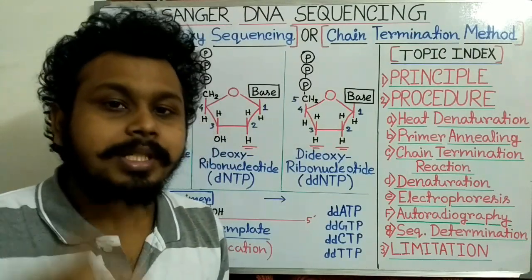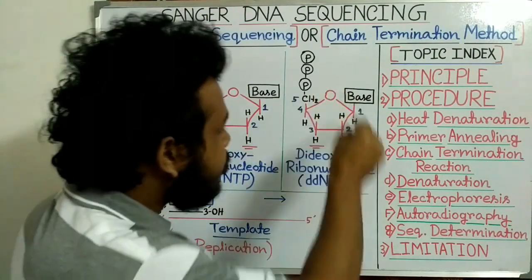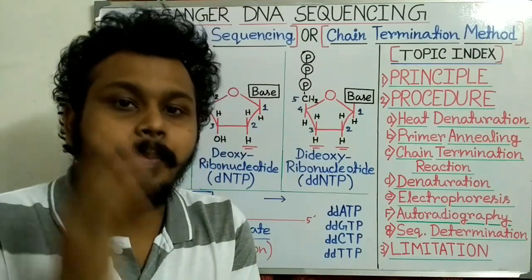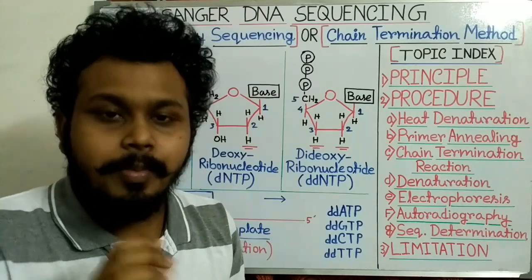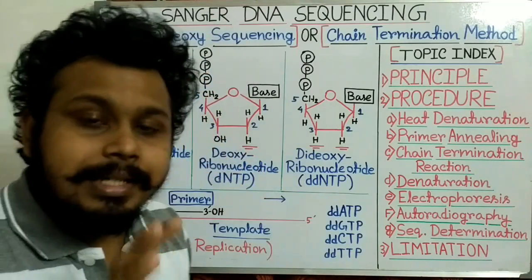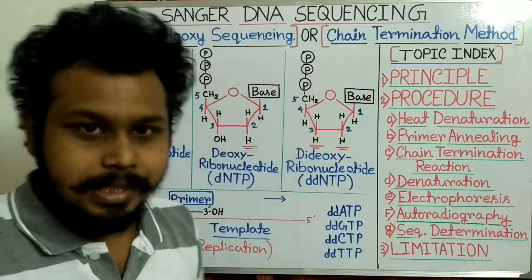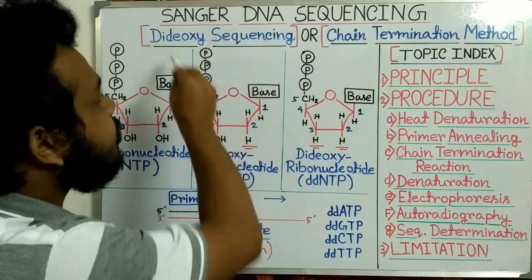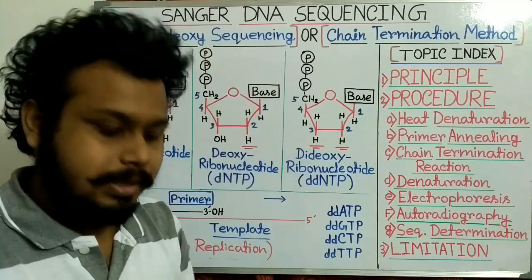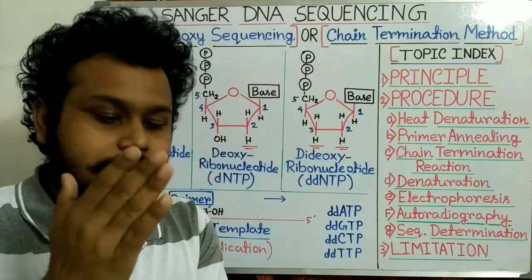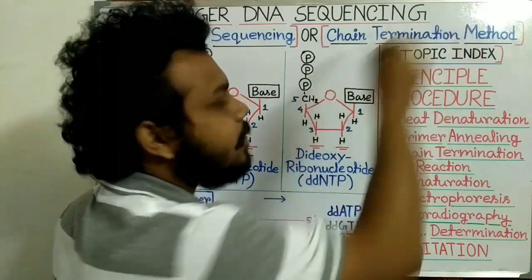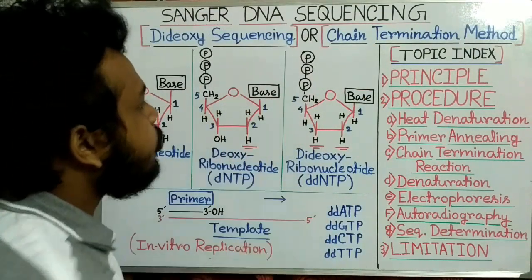It is called Dideoxy Sequencing because we use Dideoxyribonucleotides to stop or terminate the polymerization of DNA in in vitro conditions. That is the most important step of this DNA sequencing. And as these Dideoxyribonucleotides cause chain termination of the polynucleotide chain, that's why it is also called the Chain Termination Method.